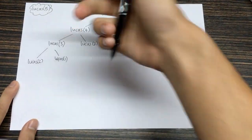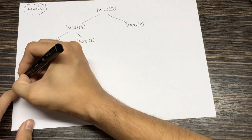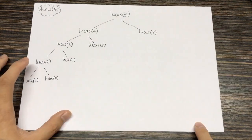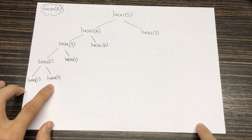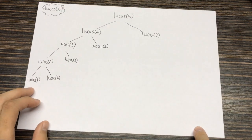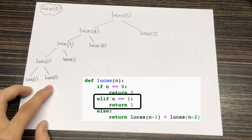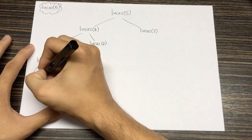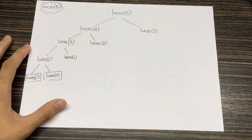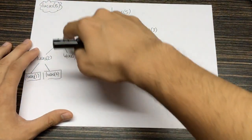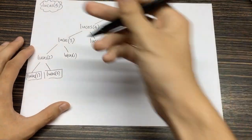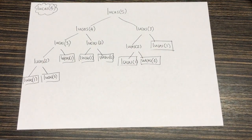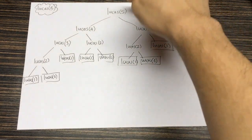And again, Lucas(2) will have to call on another function, which is Lucas(1) and Lucas(0). But when Lucas(2) calls on Lucas(1) and Lucas(0), this tree doesn't grow any further, because we know Lucas(1) is just going to return one, and Lucas(0) is just going to return two — the answer sort of stops there. Same here: when Lucas(3) calls on Lucas(1), Lucas(1) doesn't call anyone any further. So that's where the tree sort of stops. So there we have a tree that shows what function is called when we want to find the fifth Lucas number.